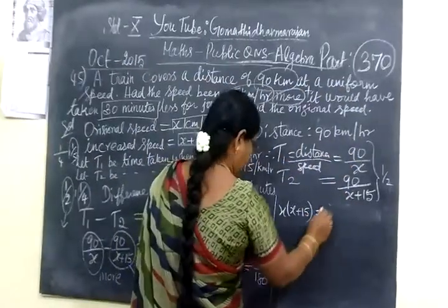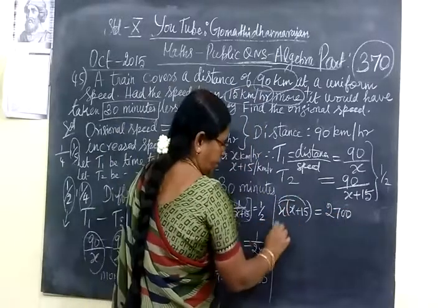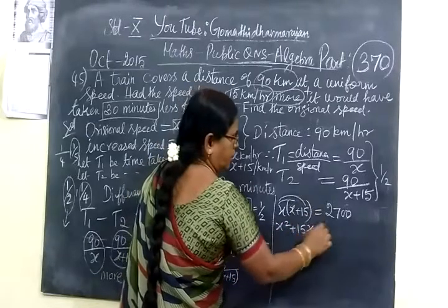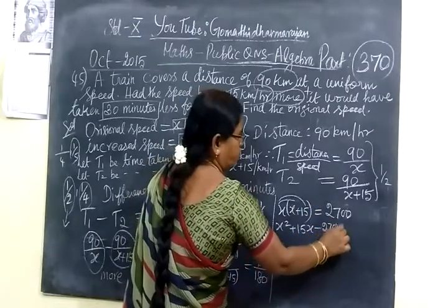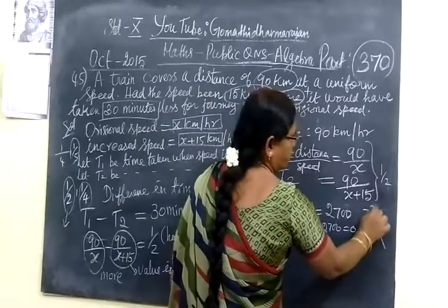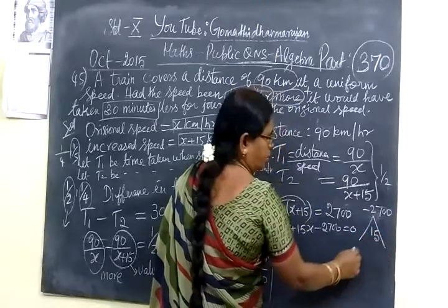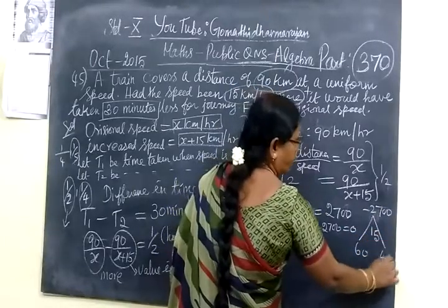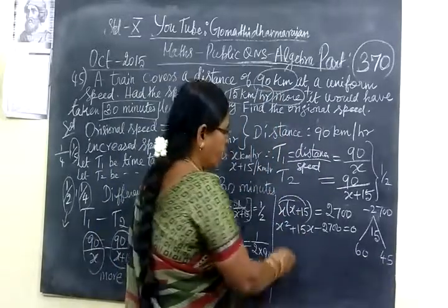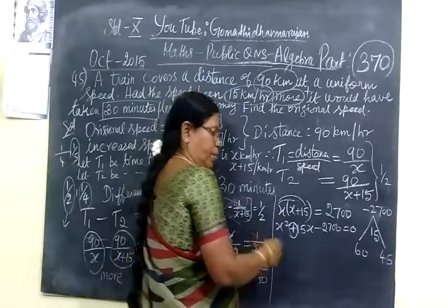Equal to 2700. You take x inside, so x² plus 15x minus 2700 is equal to 0. Multiply, this and this. Add or separate means this. You can get 60, 45. 60 and 45 multiplied equal to 2700.